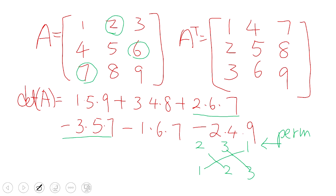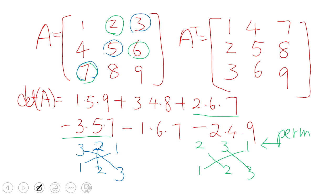Now let's look at the term 3×5×7. You take the third element in the first row, the second element in the second row, and the first element in the third row — so the permutation is (3, 2, 1). Writing down 1, 2, 3 and drawing the crossings, there are 3 crossings. Since 3 is odd, this is an odd permutation, which is negative.